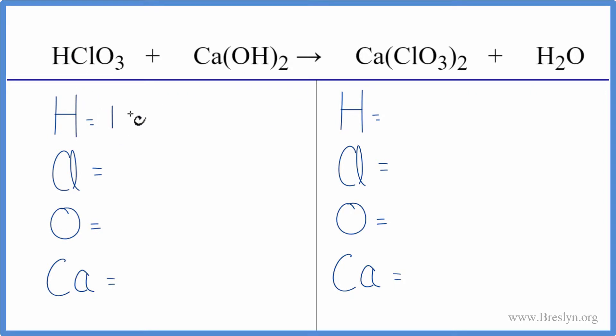So we have one hydrogen plus two times the one hydrogen here, giving us three total hydrogens. Chlorines we have one. Oxygens we have three, plus this two applies to everything in parentheses. Two times the one gives us two, so we have five oxygen atoms and just one calcium.